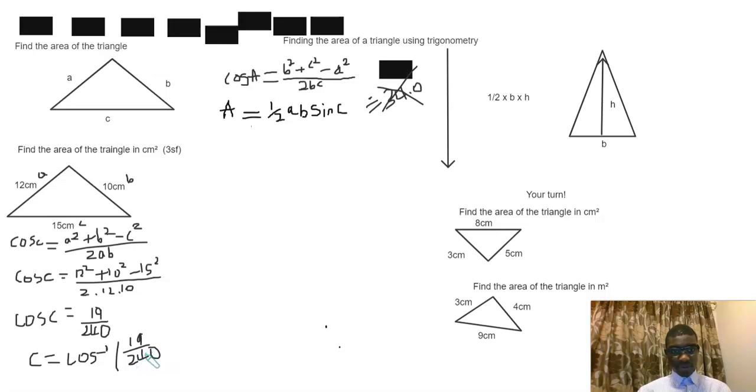Now on this occasion, like this type of question, it doesn't matter whether you're in degrees or whether you're in radians, so I'm going to give the answer in degrees. So C would be—so the cos⁻¹ of 19 over 240 is 85—